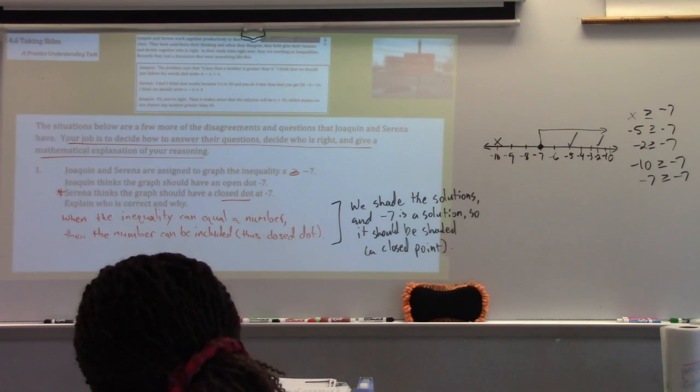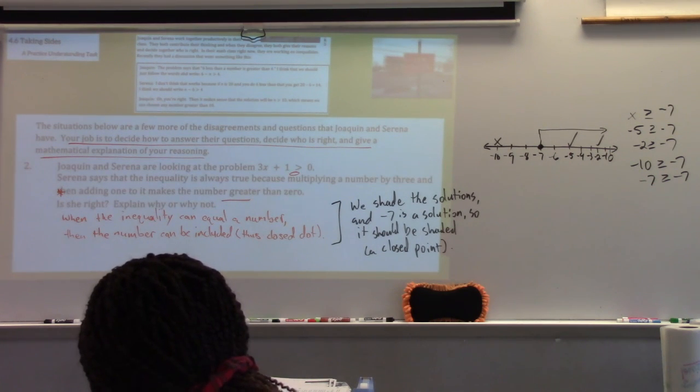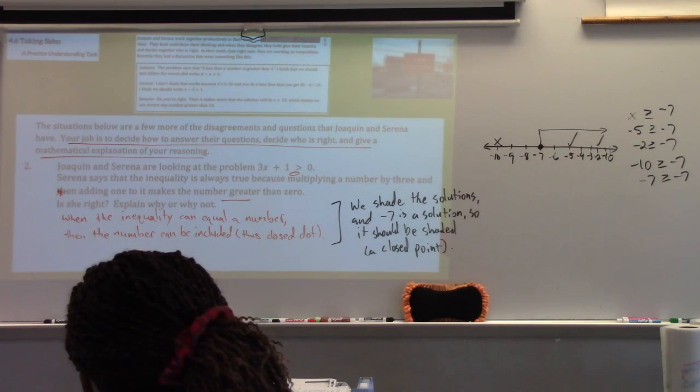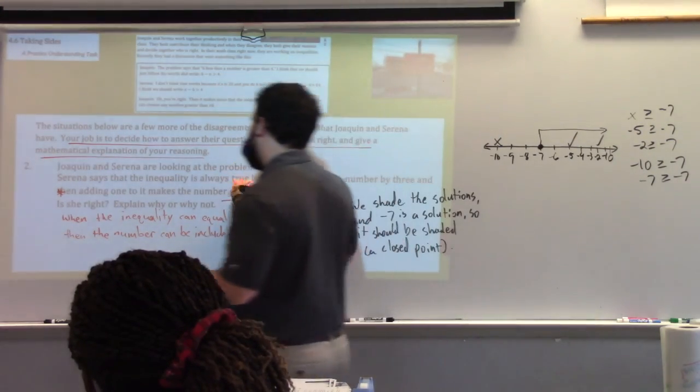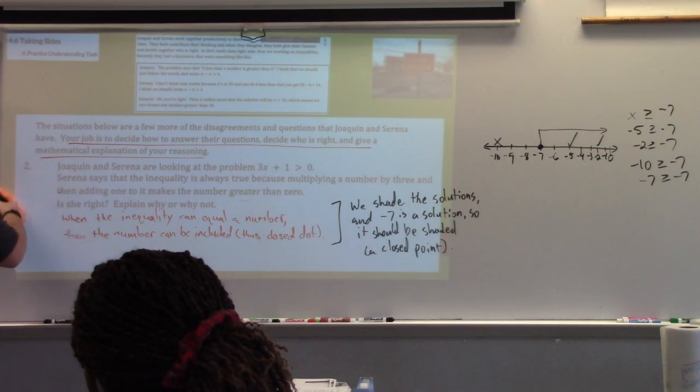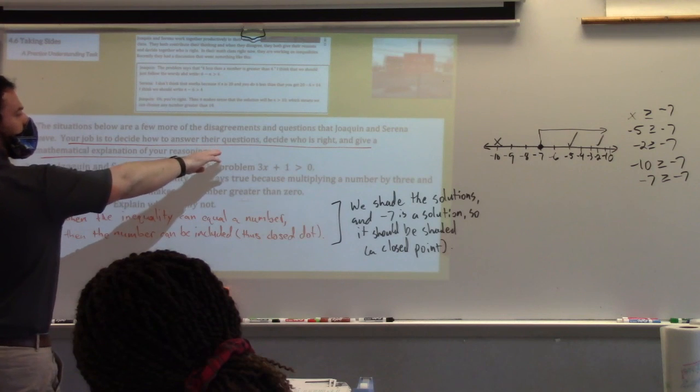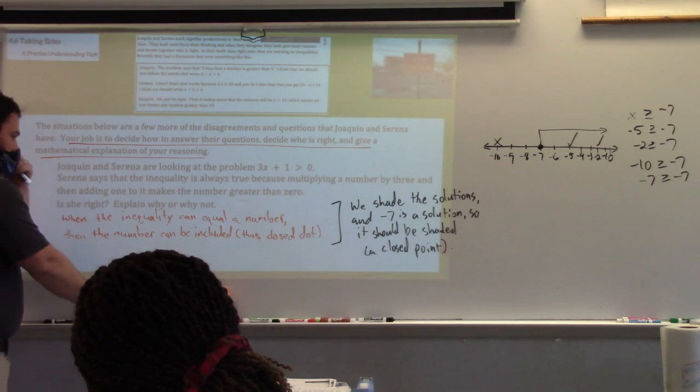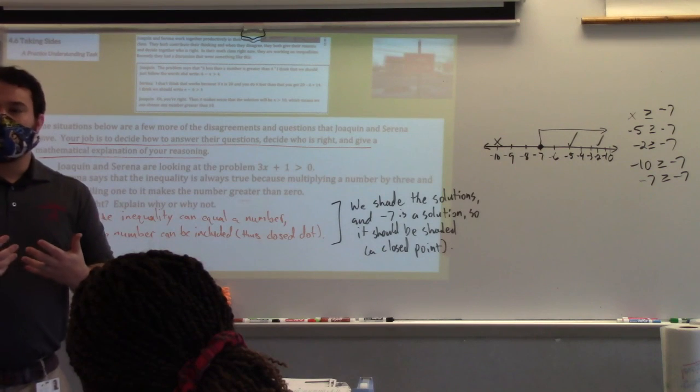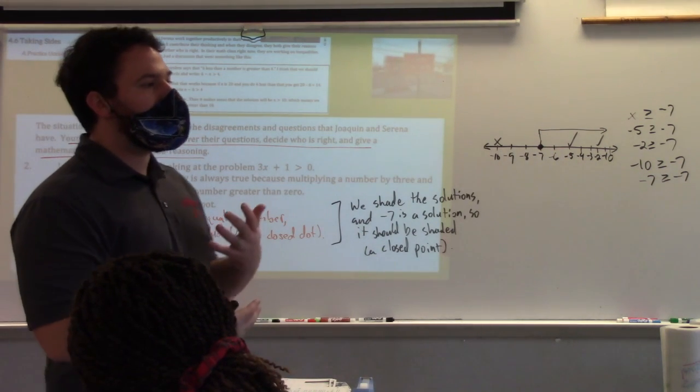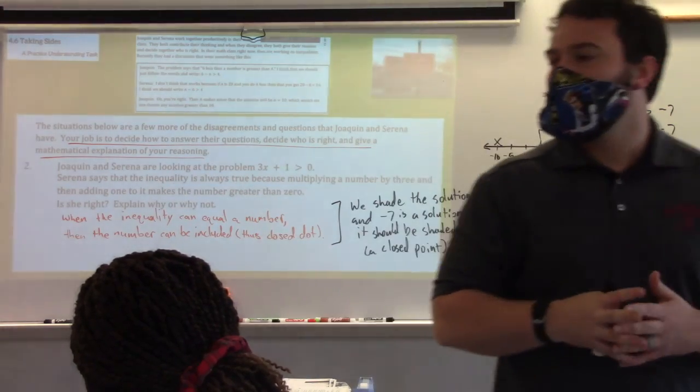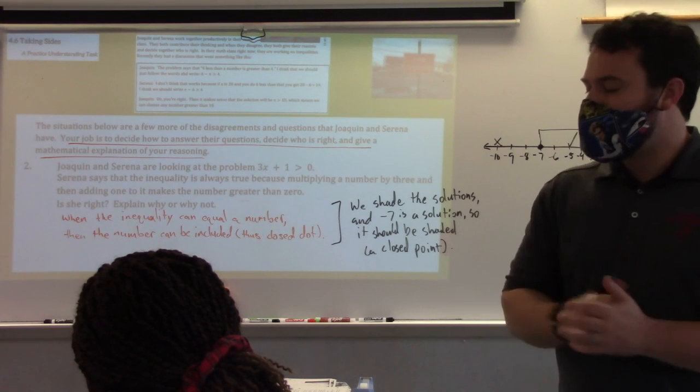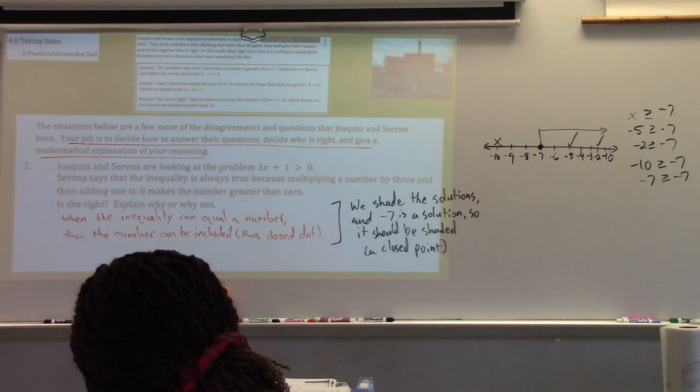All right. For the rest of the period, for the next 35 minutes, I want you all talking, I want you all discussing these, as far as we can go, these problems, starting here with number two. Joaquin and Serena are looking at the problem 3x plus 1 is greater than 0. And Serena says the inequality is always true because multiplying a number by 3 and then adding 1 to it makes the number greater than 0. Is she right? Explain why or why not. So your job is to answer the questions, decide who is right, and to give a mathematical explanation. So go ahead and start talking with each other. I'm leaving this up here for now. But that's only for number one. Go ahead and talk with each other and have this discussion. It's by thinking through these ideas. One, I can hear your thoughts and I can give you a little bit of feedback. But two, it's going to force you to think and to understand better. So go ahead and start reading through it on your own, trying to come up with an answer, and then discussing.